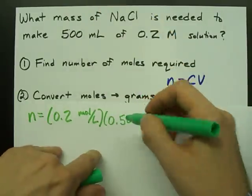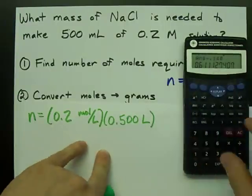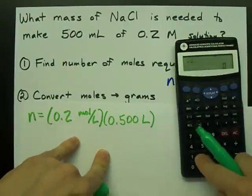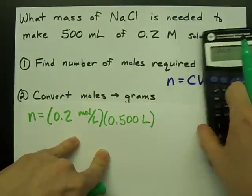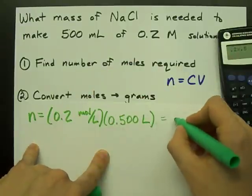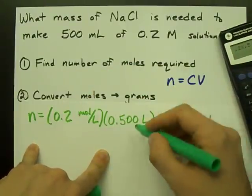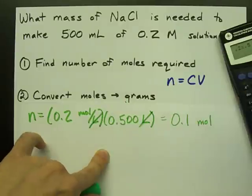I converted this to liters by dividing by a thousand, so that my units matched. 0.2 times 0.5 gives 0.1 moles. See how my liters cancel each other out? I'm left with moles.